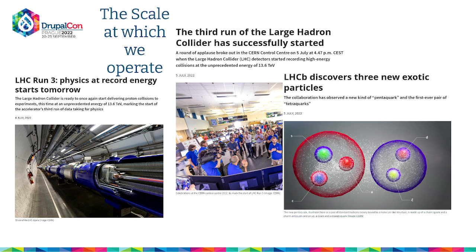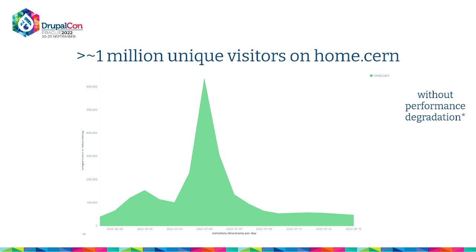Just to give an idea of the scale at which Drupal runs at CERN — these are recent blog posts on home.cern, the official CERN homepage. We had the start of Run 3, the experiment after the shutdown, and one of the experiments discovered three new particles. These were posted in a span of three to four days and generated traffic of almost 1 million unique visitors in less than a week. We were able to handle all of this without any performance degradation. This was the record for us this year.